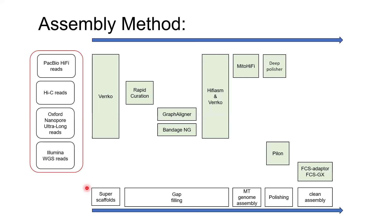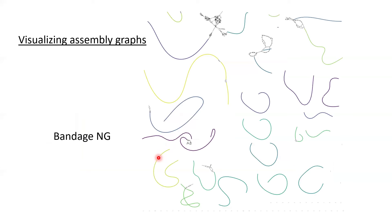Using Bandage NG to visualize the assembly graph with different colors for different scaffolds, we can use a reference to name each chromosome. In the red circles, you can find chromosomes 12, 11, and 3 — they have big tangles, probably with rDNA arrows in them. Chromosomes X and Y have tangles because they have open gaps somewhere. Chromosomes 19, 4, and 16 have two scaffolds that need to be connected to each other.